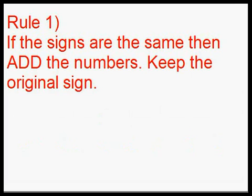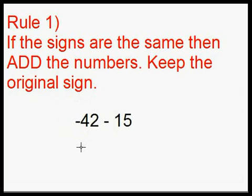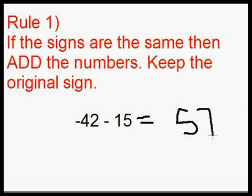There are two simple rules to remember for this method. Rule 1: if the signs are the same, then add the numbers and keep the original sign. For example, negative 42 minus 15. The signs are the same — we have a negative and a negative. So we'll do 42 plus 15, which equals 57. Now we keep the original sign, which in this case was negative, so our answer is negative 57.